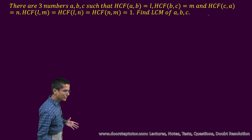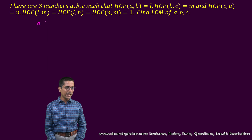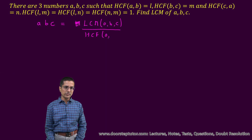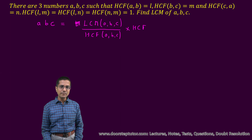We understand the relationship between the product of three numbers, their SCF and their LCM. The product of three numbers is equal to the LCM of three numbers divided by their SCF. But in addition to this, we also have to multiply it with the pairwise SCFs of the three numbers.